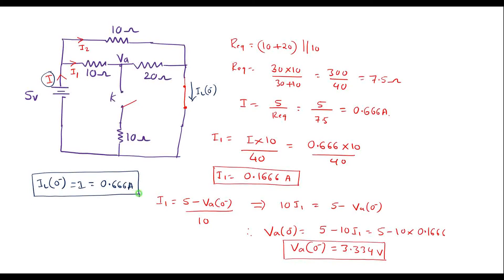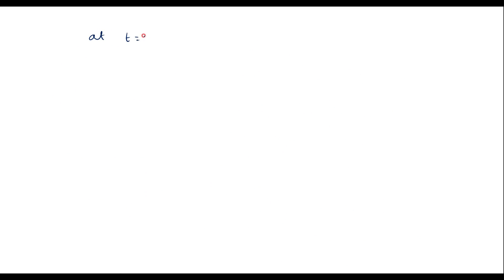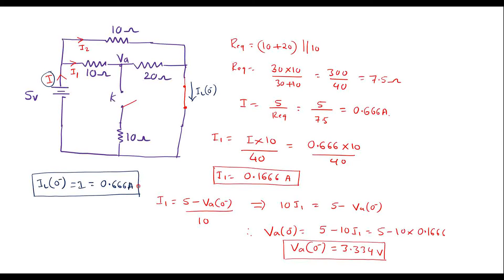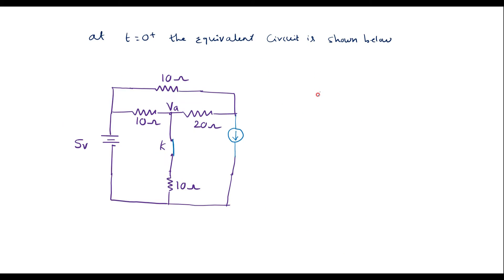This is il(0-), the inductor current when the switch was open, at t equal to zero minus. Now at t equal to zero plus, the inductor which was shorted now acts like a current source. Let me redraw the circuit at t equal to zero plus. The equivalent circuit is shown below, with a current source representing the inductor. The magnitude of the current source is 0.666 amps.